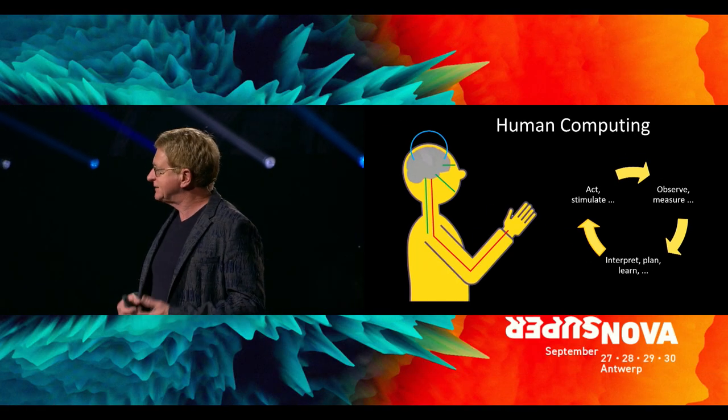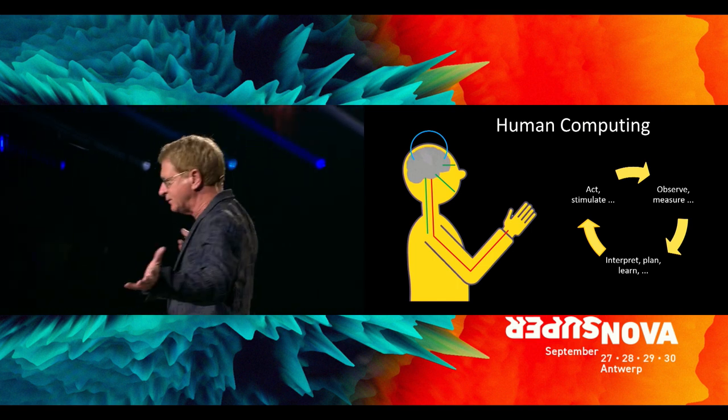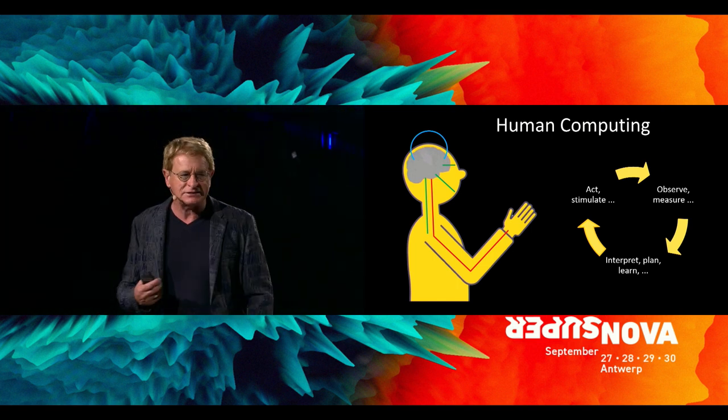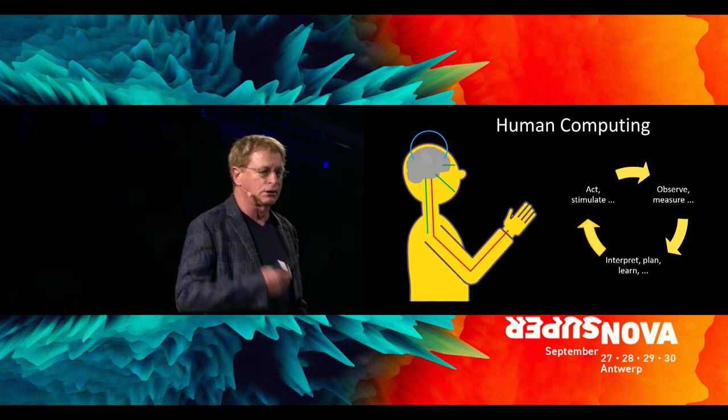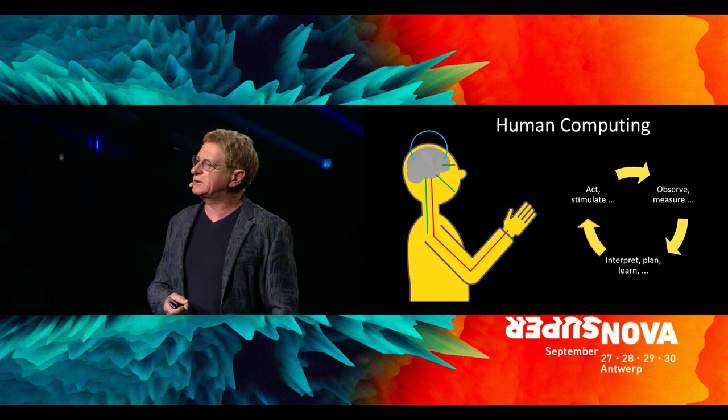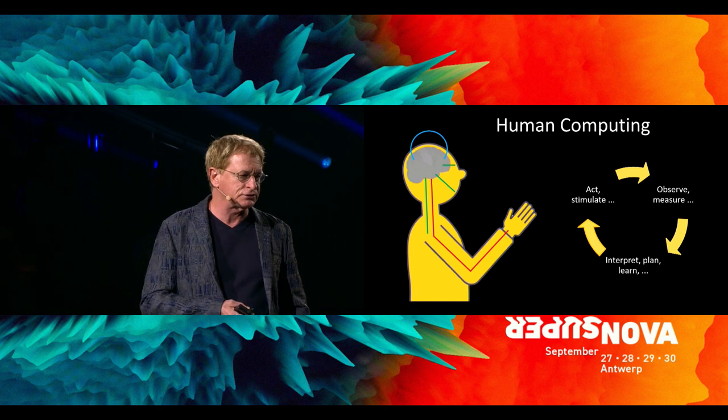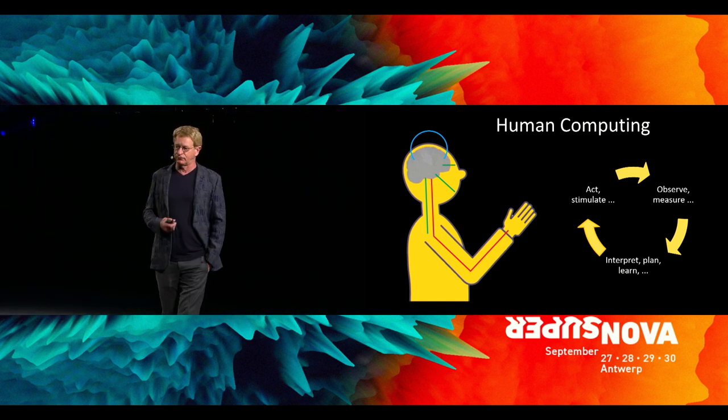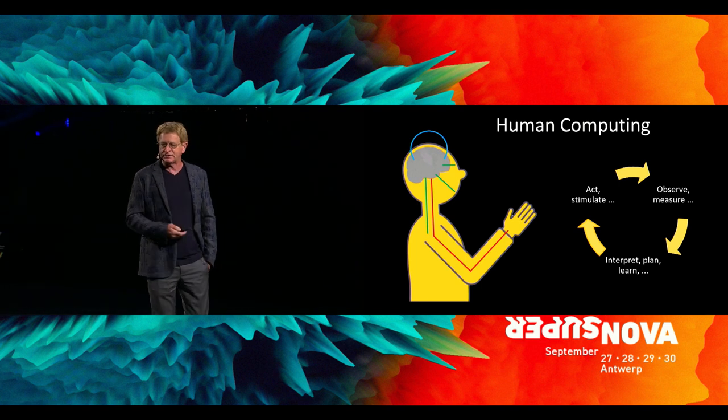That information is then sent to our central computer, the brain, that interprets it, classifies it, thinks about it, learns about it, and ultimately performs action. Performs actions, performs stimulations, interact. For instance, speaking is a perfect example of this.